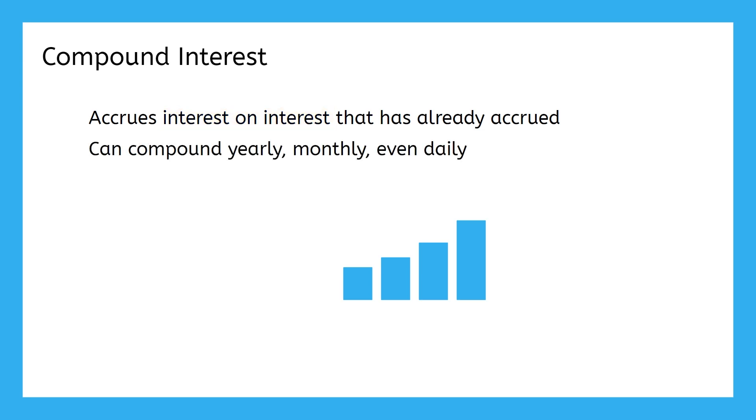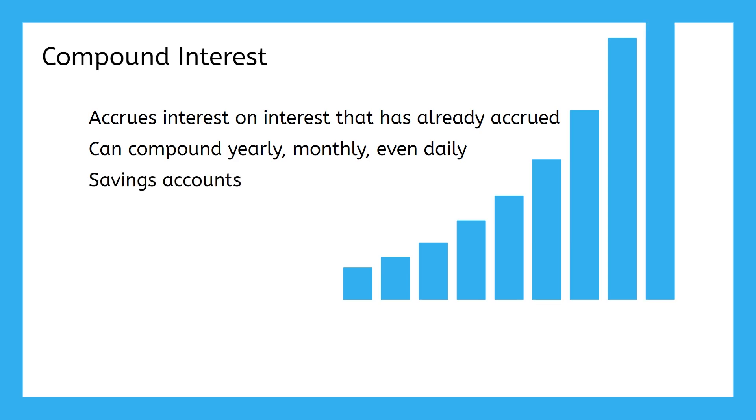Compounding can happen on any schedule, yearly, monthly, even daily. It can get really out of hand, really quickly, which is why it's good to have compounding interest on a savings account, and not so great to have it on a student loan.